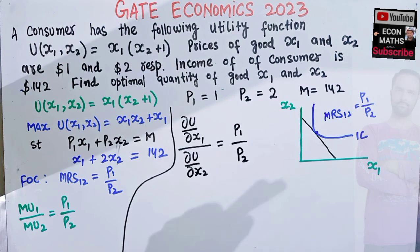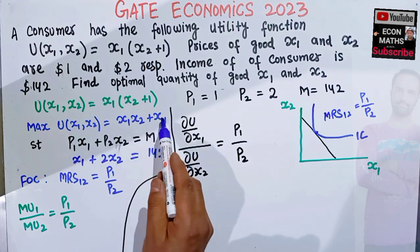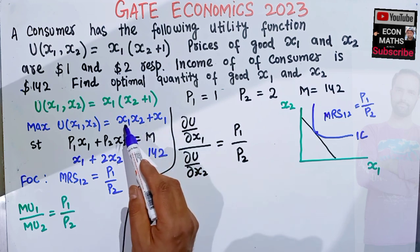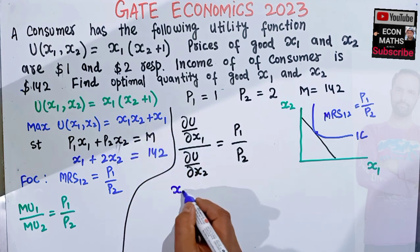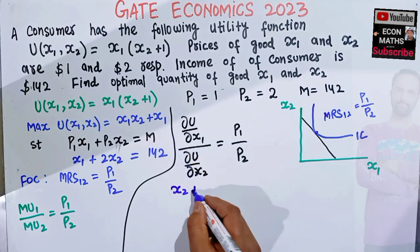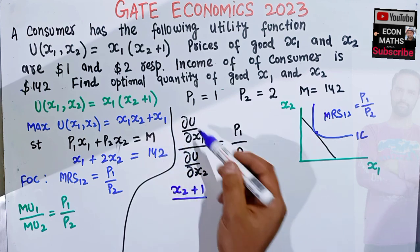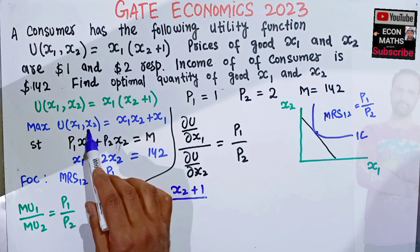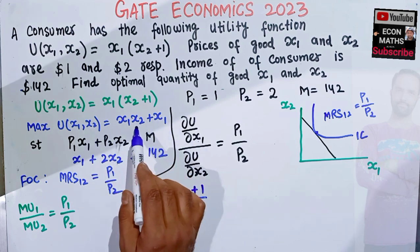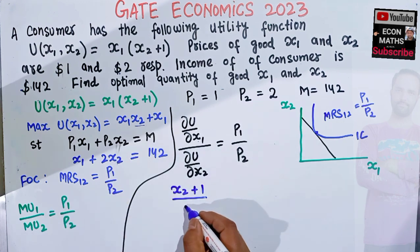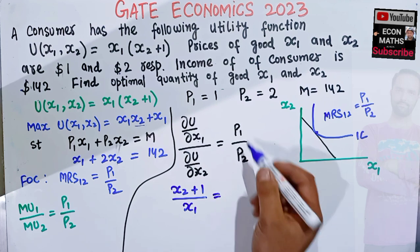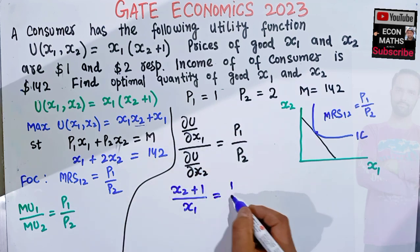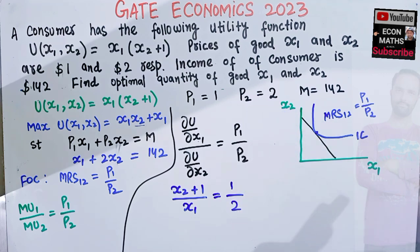Taking the partial derivative of U = x1·x2 + x1 with respect to x1 gives x2 + 1. Taking the partial derivative with respect to x2 gives x1, since the second term has no x2. So the condition becomes (x2 + 1) / x1 = p1/p2 = 1/2.